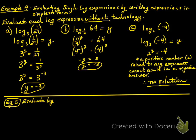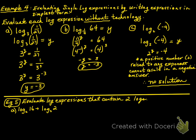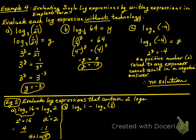Example 5: evaluate log expressions that contain two logs. If I said log base 2 of 16 plus log base 2 of 2 — 2 to the power of 4 is 16, so that log is 4. And log base 2 of 2: 2 to the power of 1 is 2, so that log is 1. And 4 plus 1 is 5. For a subtraction example: log base 2 of 1 means 2 to the power of 0 is 1, so that value is 0. Log base 2 of 1/8 is 2 to the power of negative 3. So 0 minus negative 3 becomes 0 plus positive 3, and our answer is 3.